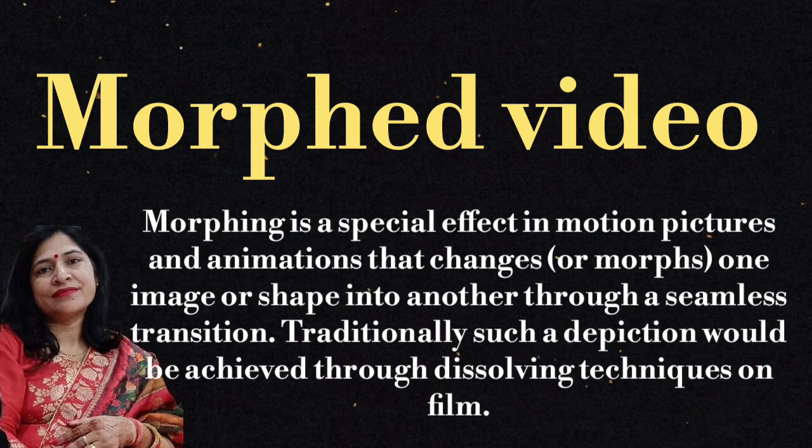Morphed video. Morphing is a special effect in motion pictures and animations that changes one image or shape into another through a seamless transition.